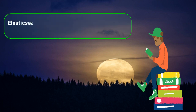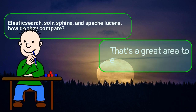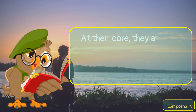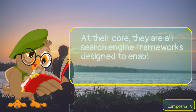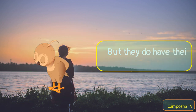I am looking into search engines for a project. I keep coming across Elasticsearch, Solr, Sphinx, and Apache Lucene. How do they compare? That's a great area to explore. At their core, they are all search engine frameworks designed to enable powerful search capabilities on large volumes of data. But they do have their differences.